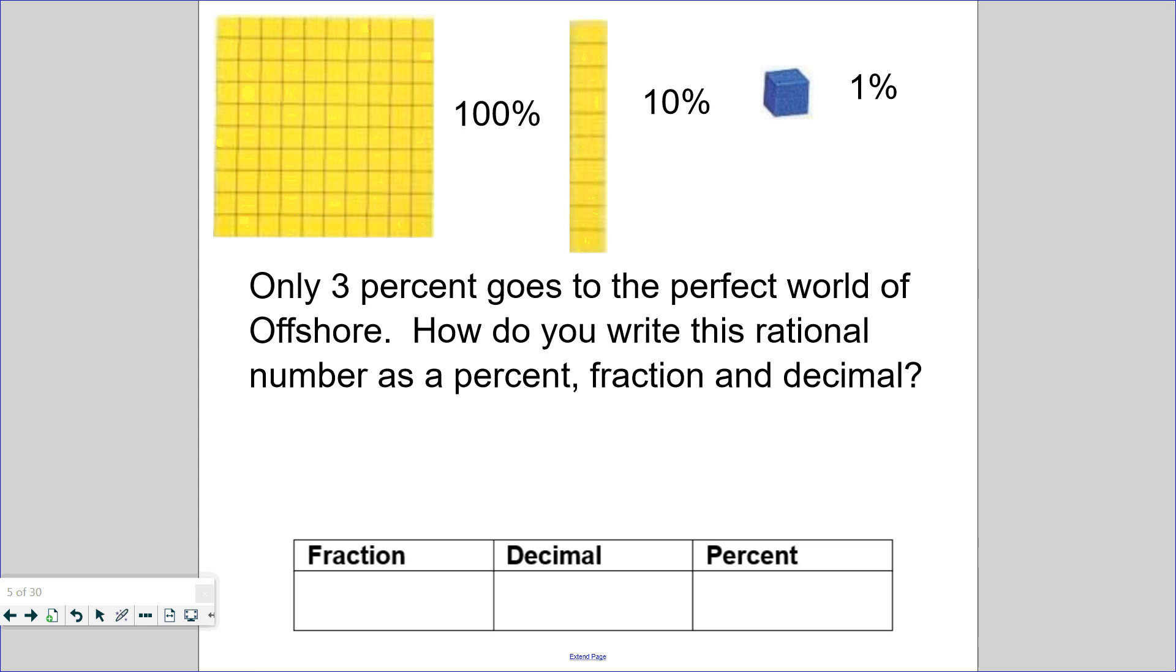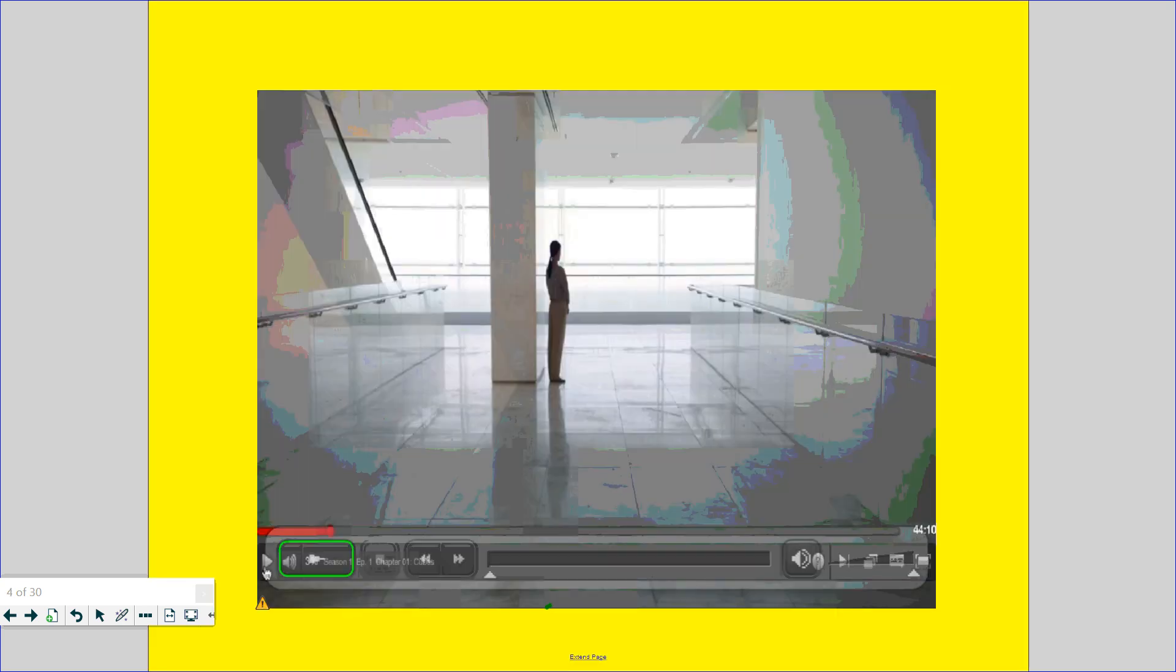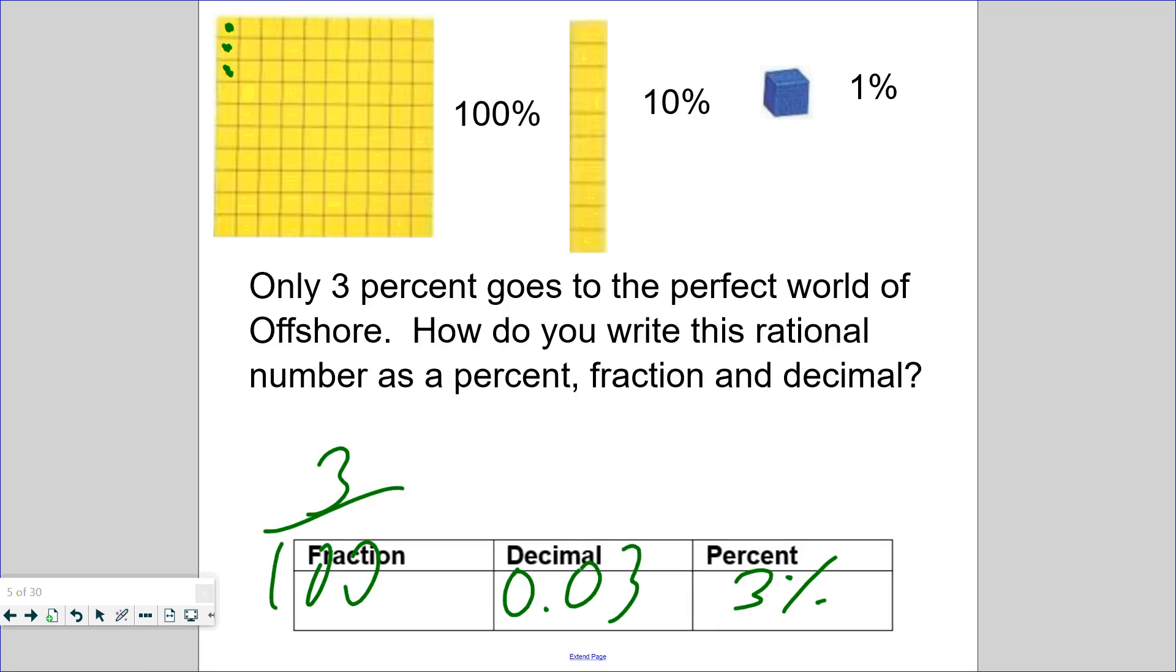How do you write this rational number as a percent, fraction, and decimal? If I was given a 10 by 10 grid like this, 3%, how would you shade it in? I would shade in three of these. So what fraction is that? 3 out of 100. And how would you say that as a decimal? 0.03. And these are all equivalent: 3/100, 0.03, 3%, all means the same thing. Again, percent is anything per 100, so what's out of 100? 3.